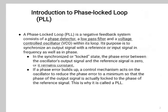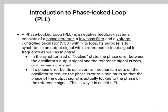Unit 6 part 4. First introduction to phase lock loop, that is PLL. A phase lock loop (PLL) is a negative feedback system consisting of a phase detector, low-pass filter, and voltage controlled oscillator (VCO) within its loop. Its purpose is to synchronize an output signal with a reference or input signal in both frequency and phase.